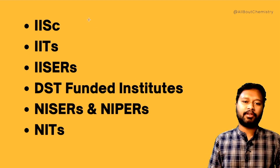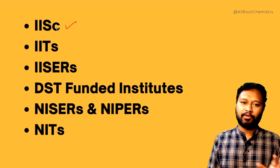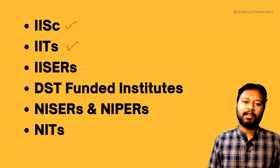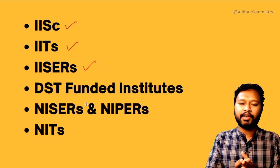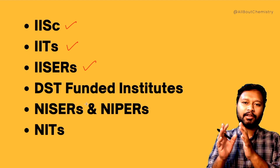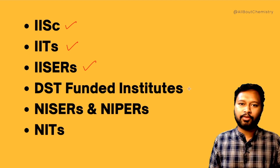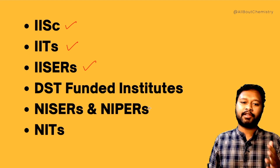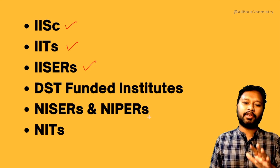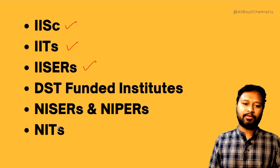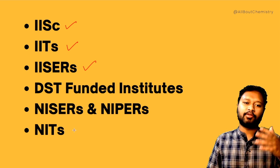Here is the list of institutes for which you become eligible once you qualify the GATE exam. First is IISc — Indian Institute of Science in Bangalore. Then IITs — Indian Institutes of Technology. Then IISERs — Indian Institute of Scientific Education and Research. Then some DST-funded institutes — Department of Science and Technology has funded institutes highly motivated towards research. Then NISER and NIPERs, and finally NITs — National Institutes of Technology.